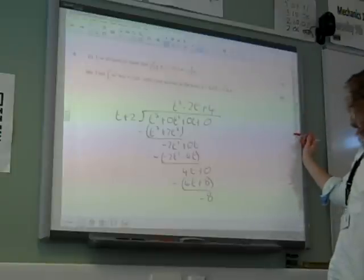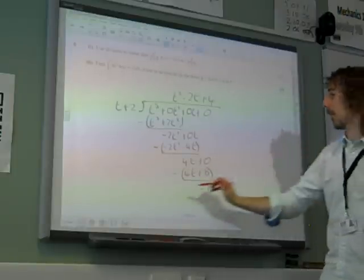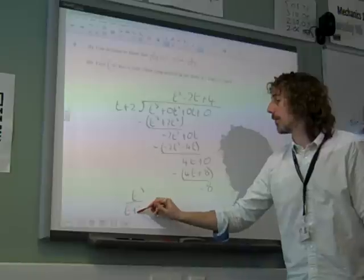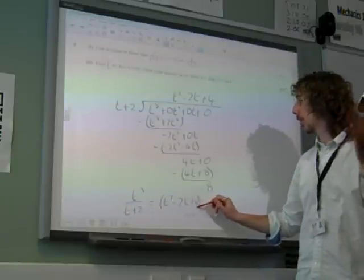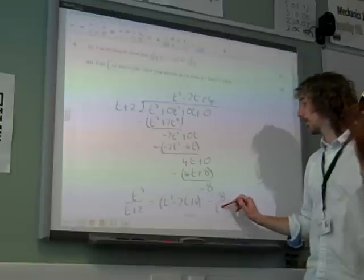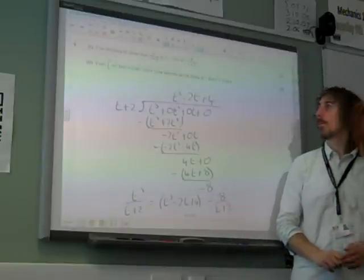And I think we ought to finish that off by writing. So, t cubed over t plus 2 is that thing that's up at the top. Minus 8 over t plus 2. There we go.